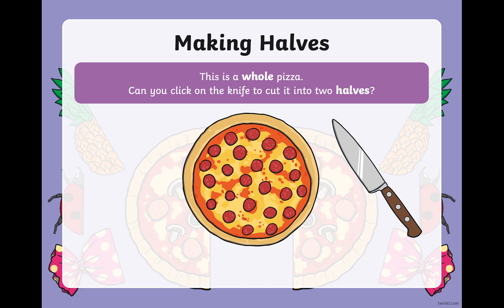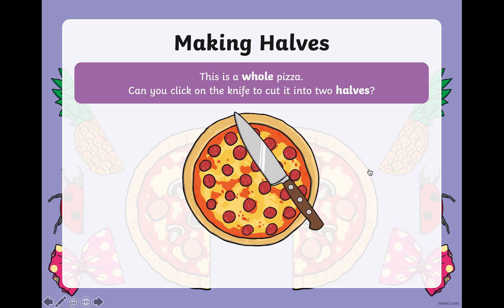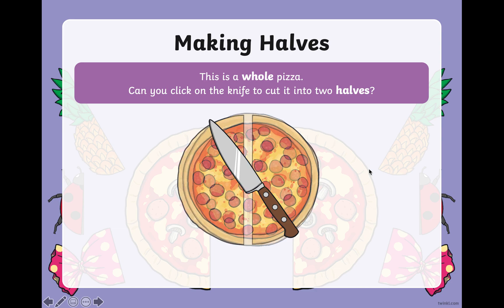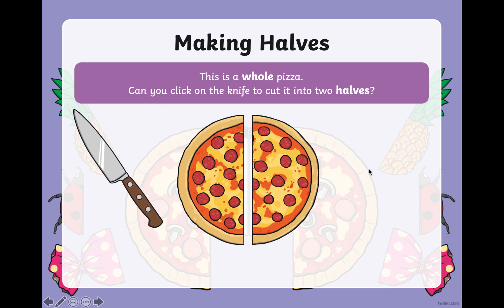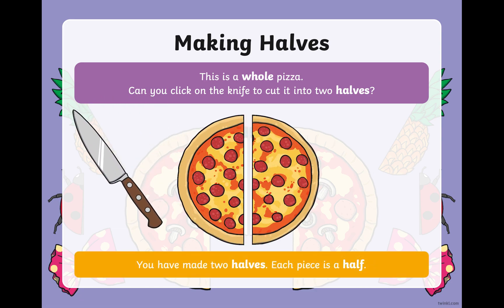Now if we are going to cut this pizza, we have to cut it in the middle. So we have to have the same on this side and the same on that side. Think about it like sharing with your friends. If you and your friend are having a pizza and you want it to be fair, then you have to each have the same size. So this half will be for you and this half will be for your friend. Each piece is called a half.